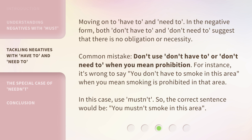For instance, it's wrong to say 'you don't have to smoke in this area' when you mean smoking is prohibited in that area. In this case, use mustn't. So the correct sentence would be: 'you mustn't smoke in this area.'